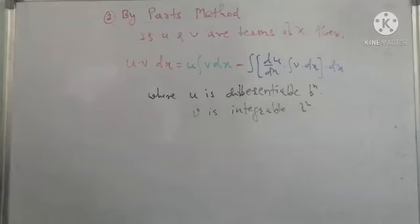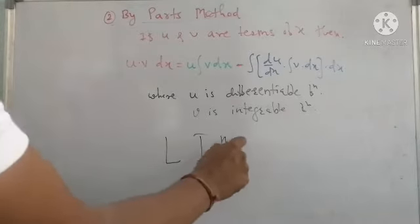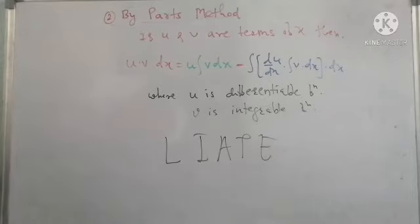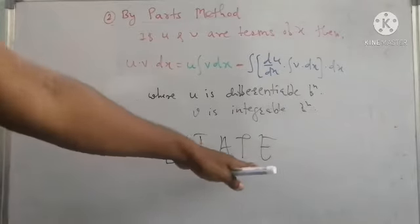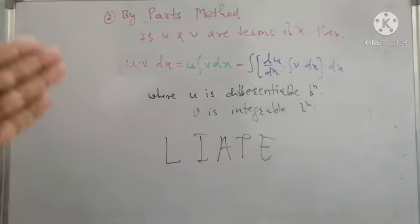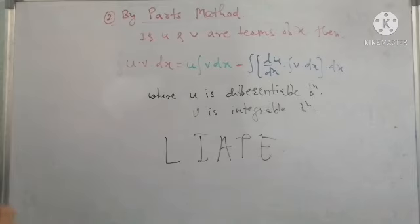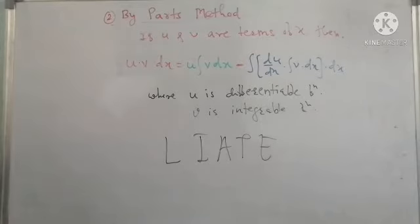To determine the order of the functions u and v — that is, which is first and which is second — we use a rule called LIATE. L stands for logarithmic function, I for inverse trigonometric function, A for algebraic function, T for trigonometric function, and E for exponential function. All these are standard functions and all are differentiable, so each can be taken on the left-hand side. However, logarithmic and inverse trigonometric functions are only differentiable — their standard integrations are not given — so they must always be taken as the first function.